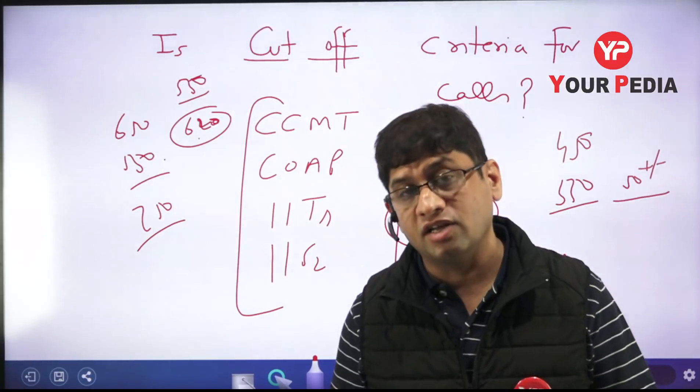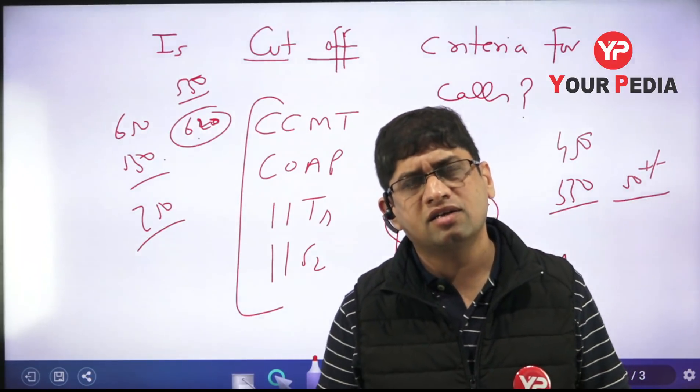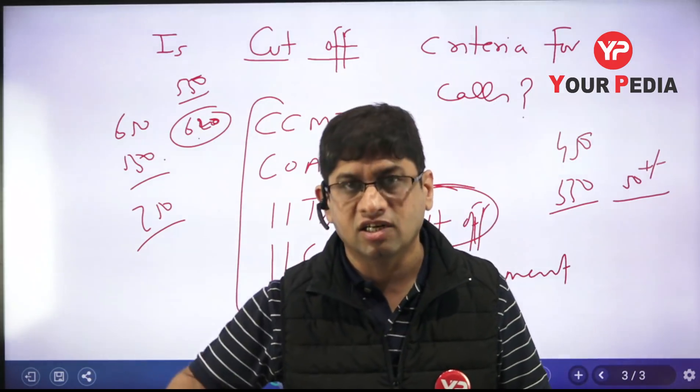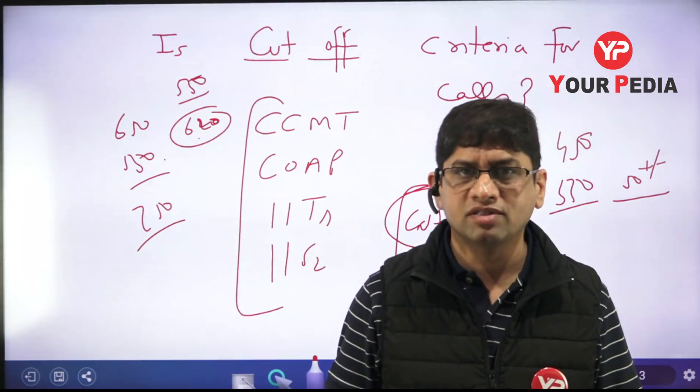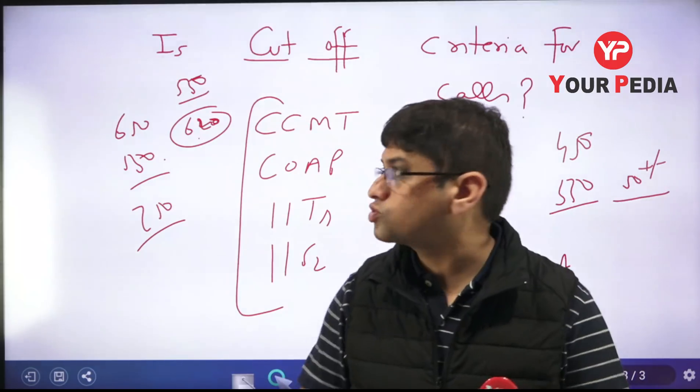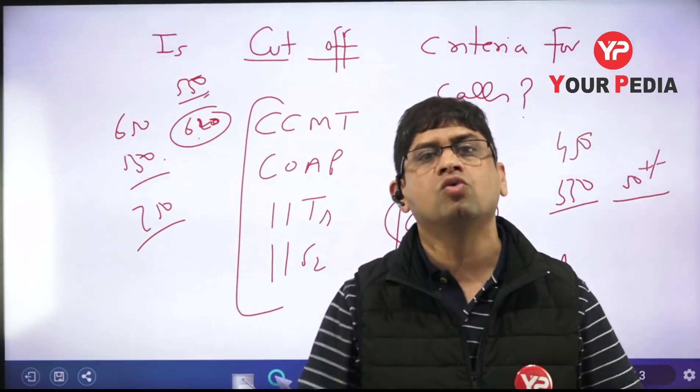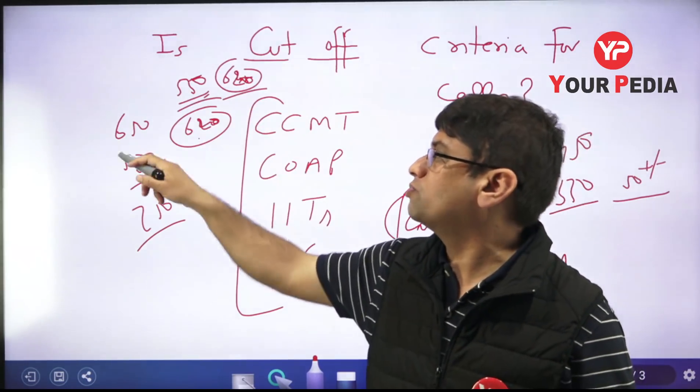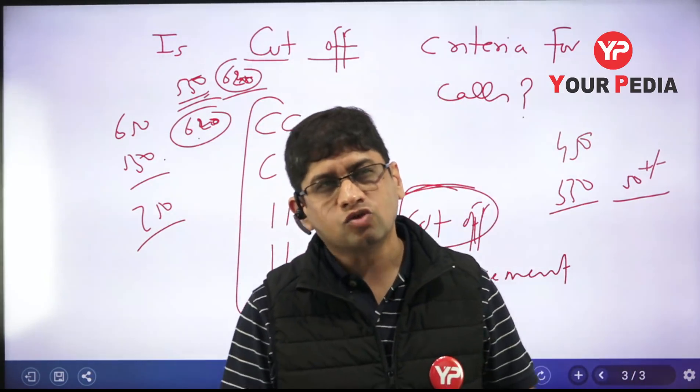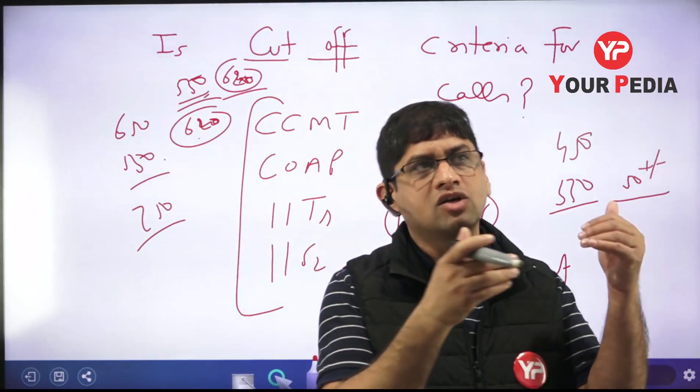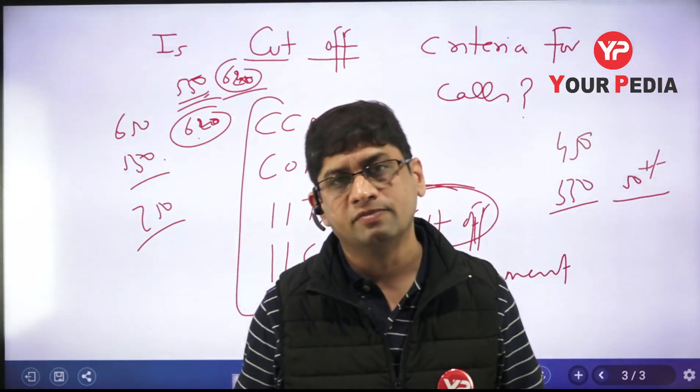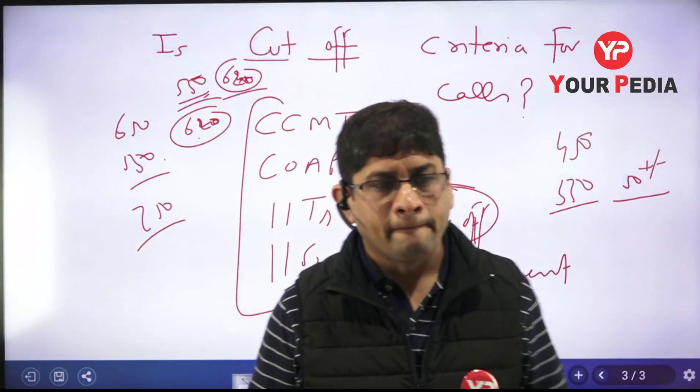Based on my past experience and details from students, sometimes I feel that some IITs also put the cutoff on the basis of selection, not call. You understand the difference? They must have called students up to 550, but the last student who was selected had a score of 620. So the cutoff which IIT is giving, is that for the call last year or for the selection? That also is to be seen carefully.